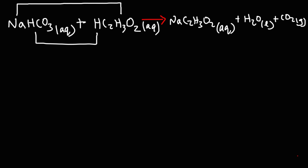In order to write the total ionic equation, everything in the aqueous phase has to be converted into ions. Everything that's not in the aqueous phase, we're just going to leave it the way it is. Sodium bicarbonate, that's in the aqueous phase. So we're going to write it as Na+, and HCO3-.